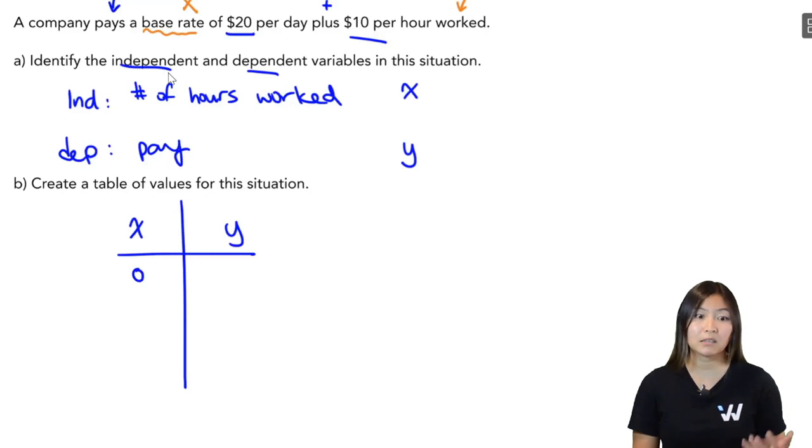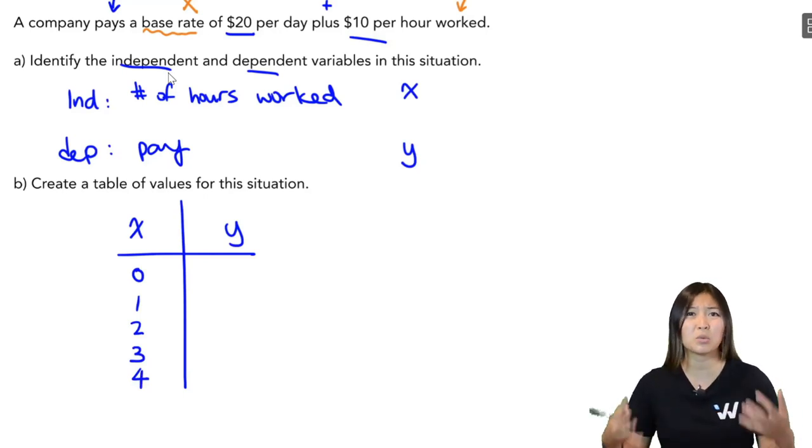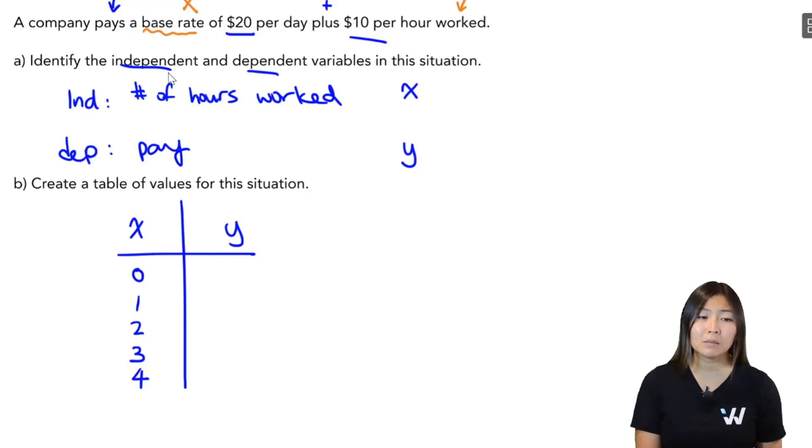And then I'm just going to pick nice numbers like one, two, three, four, and so on. If you really wanted to, you could have picked two, four, six, or even 10, 20, 30. My only recommendation to you is to make sure that your X values or your independent values go up by the same amount every time. It will make your calculations that much easier and that much nicer.